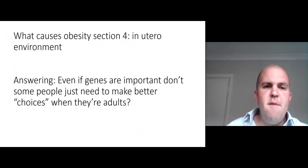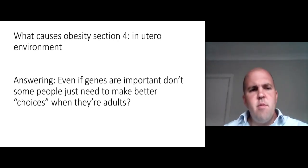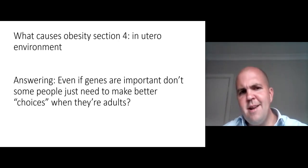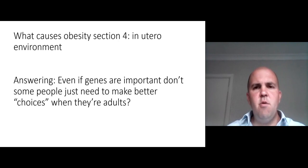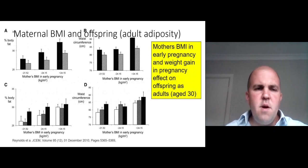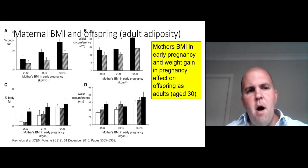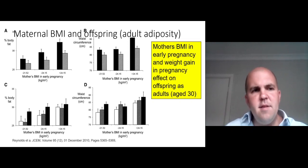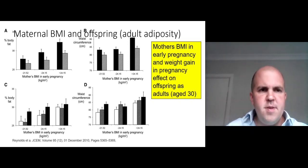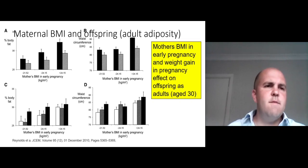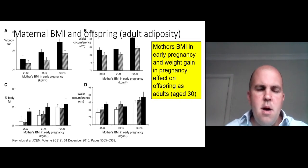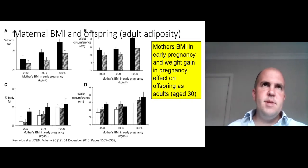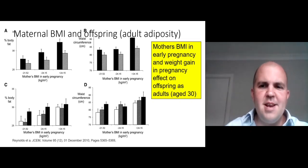There's also a role for the in utero environment. Some say if genes are so important, people just need to make better choices as adults — but that can't be true when the environment we're exposed to in the uterus can also be relevant to our lifetime risk of developing obesity. Focusing on the top left panel and the black bars: these were women in their first pregnancy, and their children were studied at age 30. The BMI of the mothers was very relevant to the percentage body fat of the offspring, even when studied as adults.